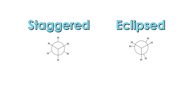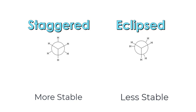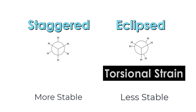For eclipsed Newman projections, they are always going to be less stable than a staggered Newman projection. This has to do with the fact that eclipsed Newman projections have torsional strain. On the other hand, staggered Newman projections are going to be more stable because they lack torsional strain.